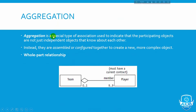What is aggregation? Aggregation is a special type of association used to indicate that the participating objects are not just independent objects that know about each other. Instead, they are assembled and configured together to create a new or complex object — a whole-part relation.